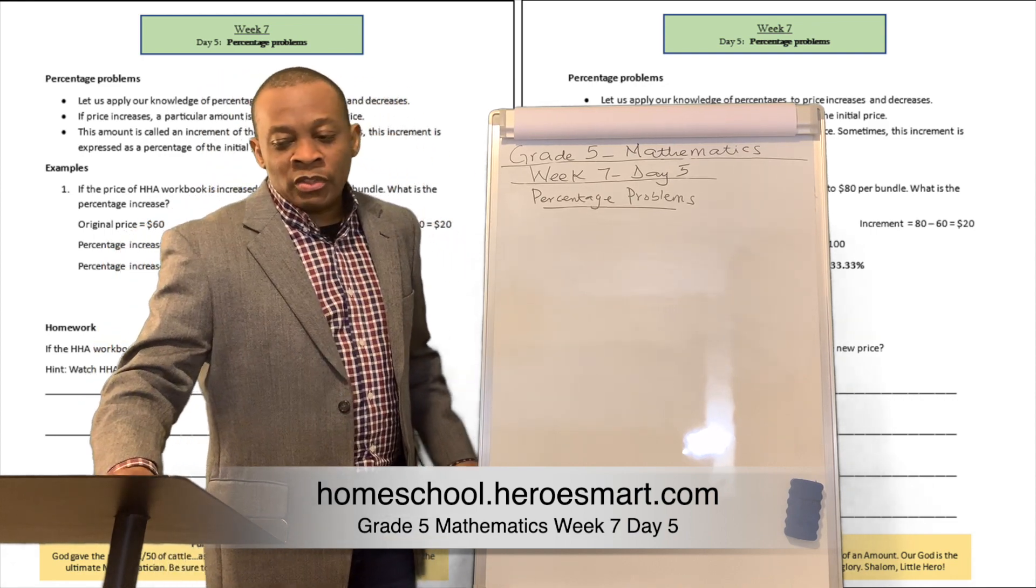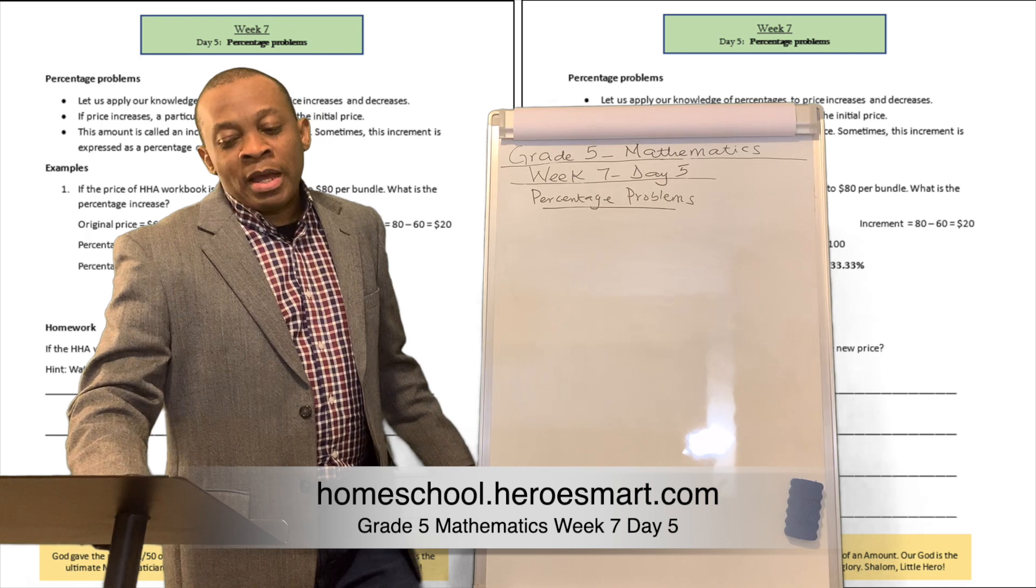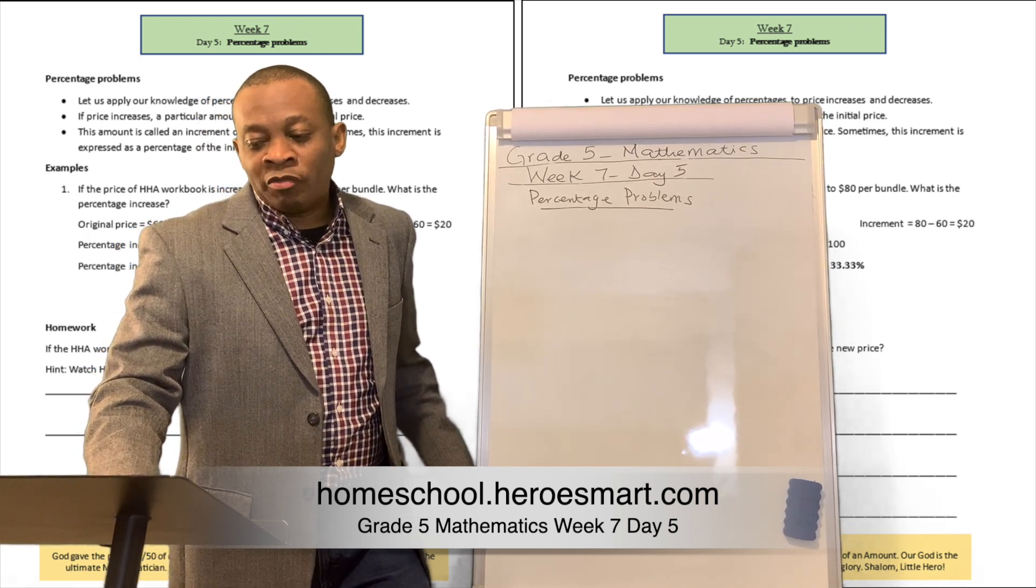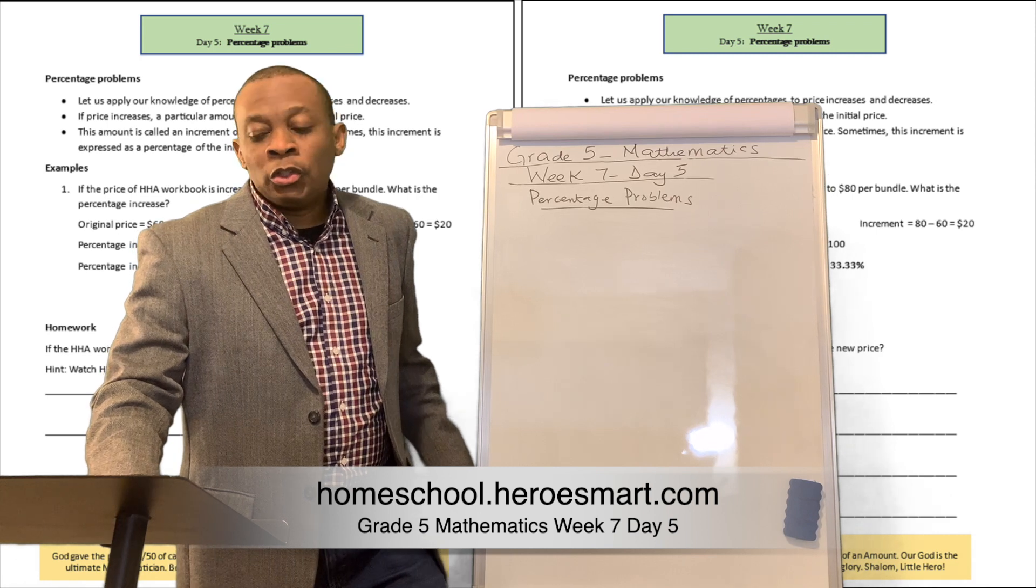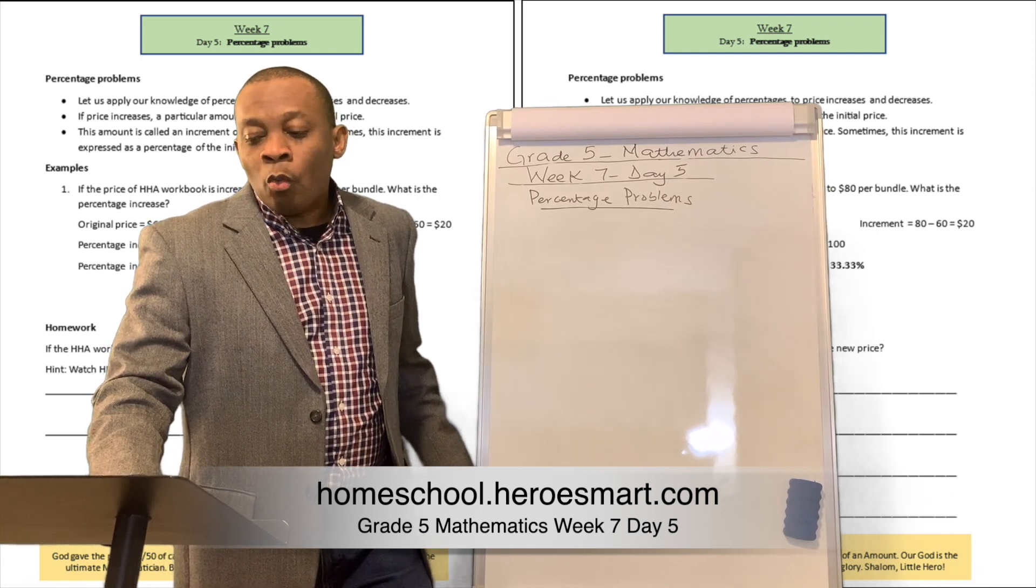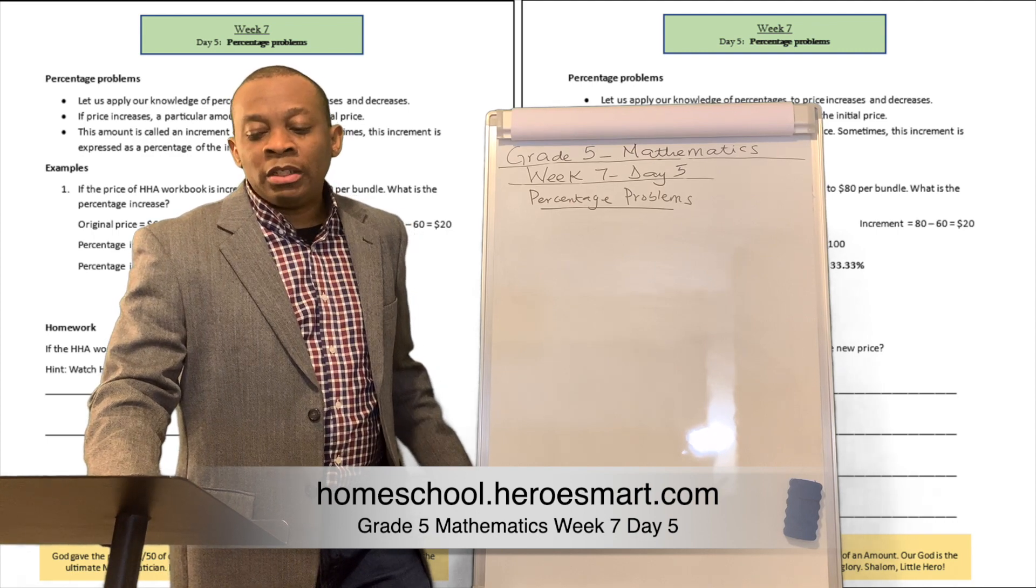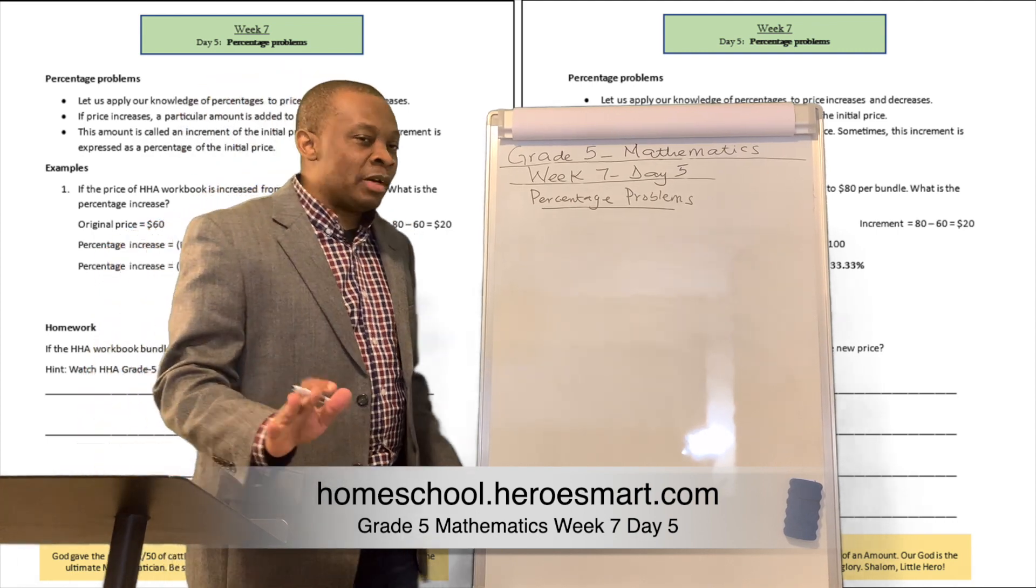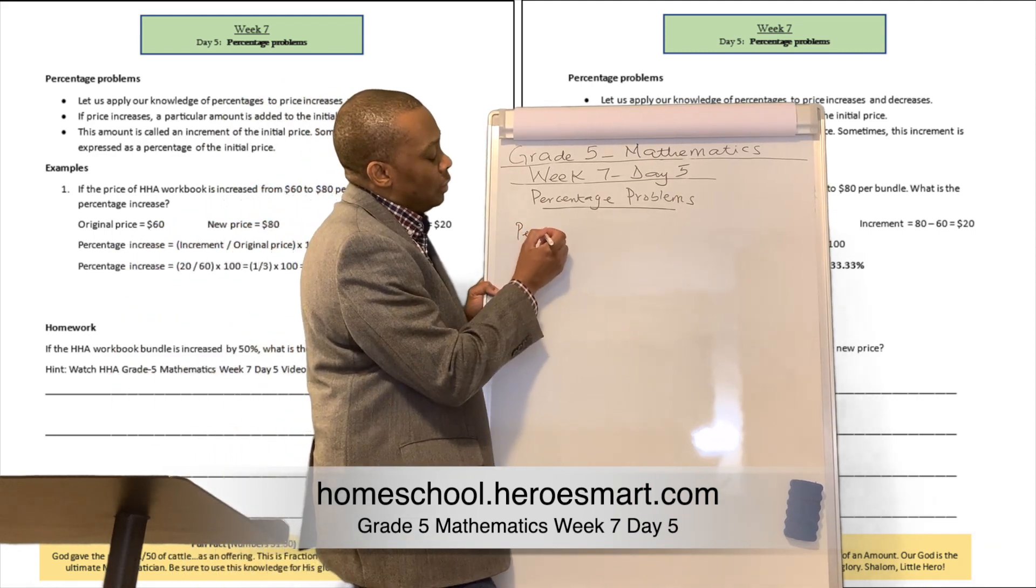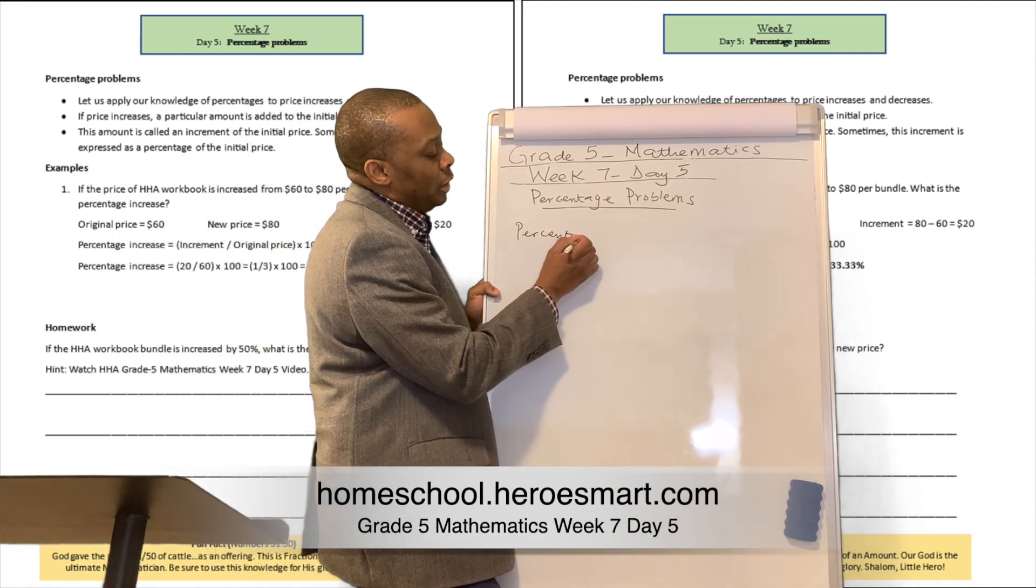So let's look at this example. If the price of an HHA workbook is increased from $60 to $80 per bundle, what is the percentage increase? All right, so this one is a very tricky question. You've got to slow it down a little bit. Okay, so percentage increase, let's write down the formula here.